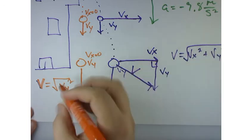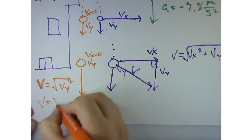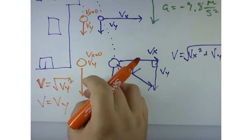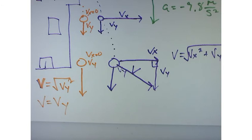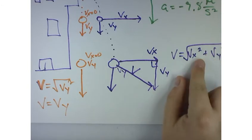By the way, what is the square root of Vy squared? Vy. So my velocity of this, the total velocity, is Vy, and that makes sense from a practical perspective, because it's not moving in the X direction. But this one is Vy squared plus whatever we have in the X direction, so this would be more.